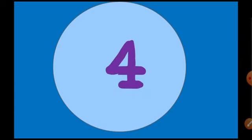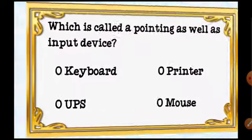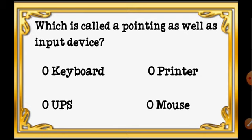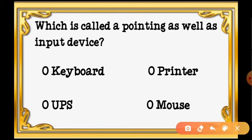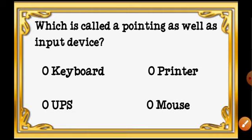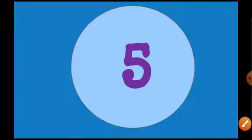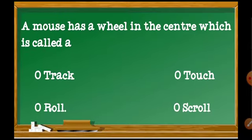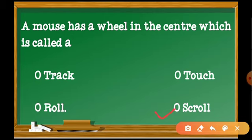Question number 4: Which is called a pointing as well as input device? Answer is Mouse. Question number 5: A mouse has a wheel in the center which is called a track wheel, touch wheel, roll wheel, or scroll wheel. The answer is Scroll wheel.